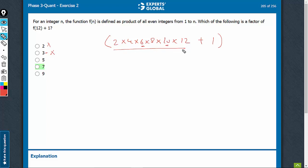5, there's a 10 here. So this entire part is a multiple of 5. When we add 1, 5 is not going to be a factor of this, I mean.